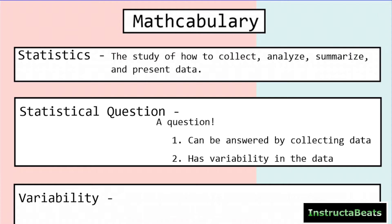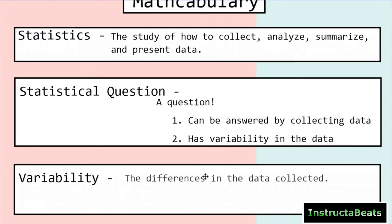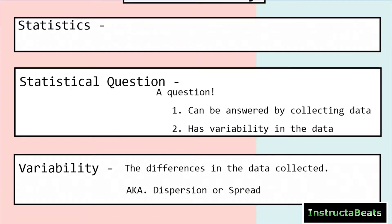If a statistical question has to have variability in the data, what is variability? It's a tricky word to say, so a little bit of grace and we'll move on. Variability is the differences in the data collected. This can also be called dispersion or spread. All three of those terms are referring to the differences in data that's being collected.